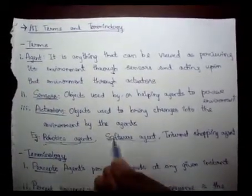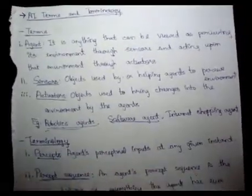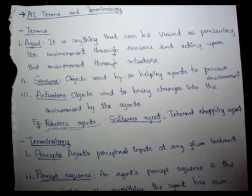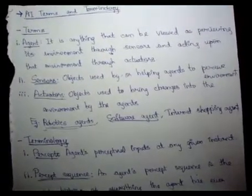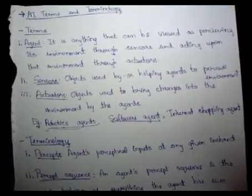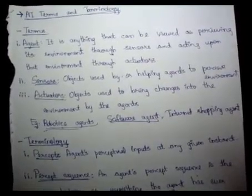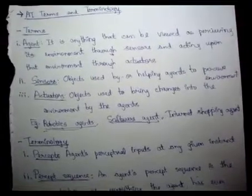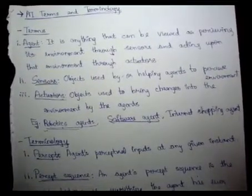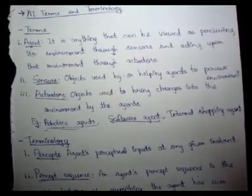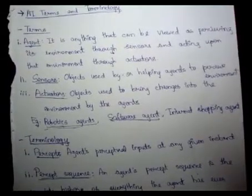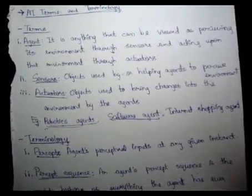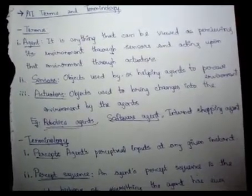In a software agent, the sensors are keystrokes, file contents, and network packets. For network packets, we will learn about computer networks in the future. These sensors are used to gain data from the surroundings, and the software agent produces changes upon a screen, write-in files, and network packets.